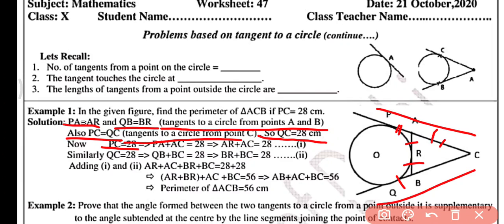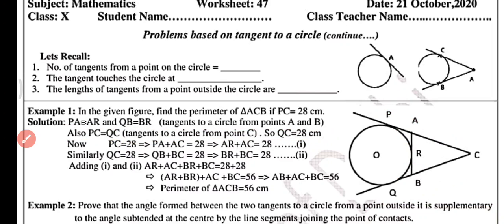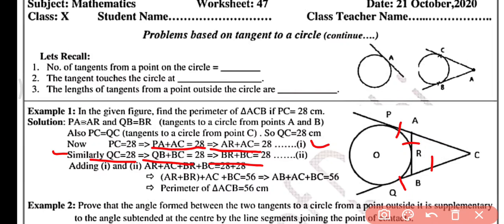PC has two parts: PA plus AC, so PA plus AC equals 28 centimeters. PA can be written as AR, so AR plus AC equals 28 centimeters — this is equation one. Similarly, QC equals 28 centimeters and QC has two parts: QB plus BC equals 28 centimeters.